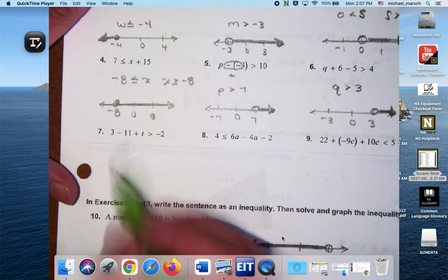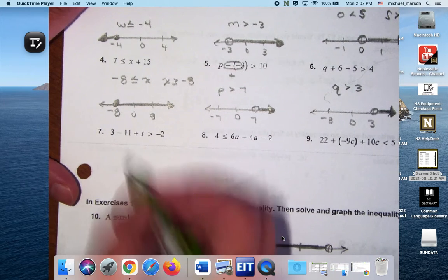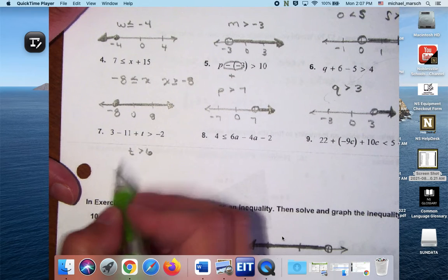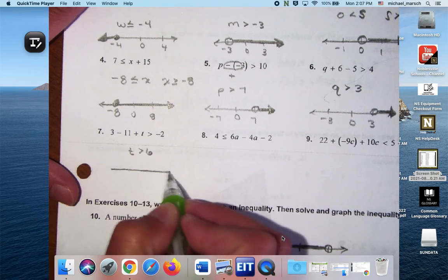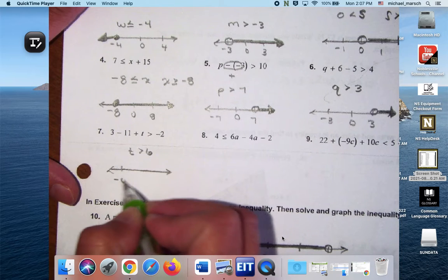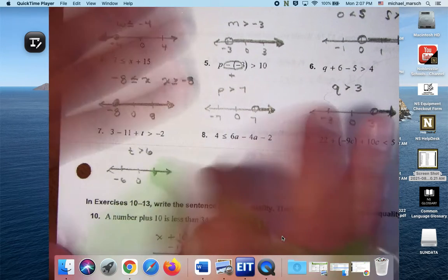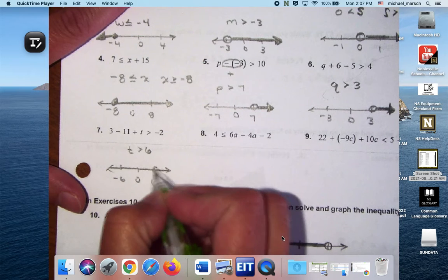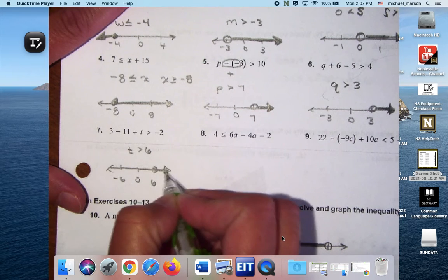And then we've got a little bit more complex stuff happening over here, but you would get T is greater than 6. Negative 6, 0, and 6. Lots of greater than's on this page.